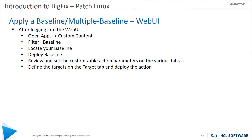Applying a baseline or multi-package baseline via the web UI: you can't create them there, but you can apply them. After logging into the web UI, open the Apps dropdown, look for Custom Content, filter on Baseline, locate your baseline, and deploy it as usual. Nothing changes — you can deploy these just as easily using the web UI or the standard console.